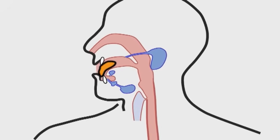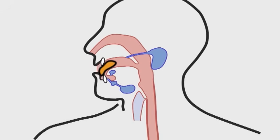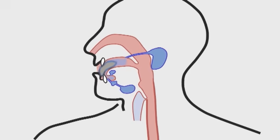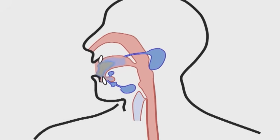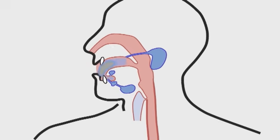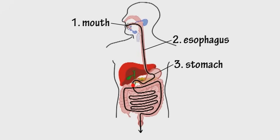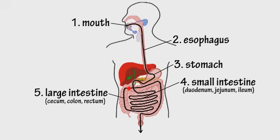Everybody needs to know these alimentary facts — that food begins its journey through our digestive tracts in the mouth. Before it travels very far, it must be chewed thoroughly and mixed with saliva. Do you know the general direction that food travels during the process of digestion?